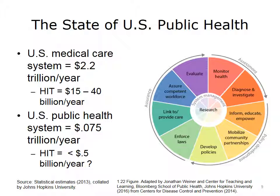The term population health is a controversial one for some public health professionals. Some in the public health community believe that the medical care system and insurance organizations have co-opted the term population health, where in fact public health departments and practitioners are the ones toiling in the field with limited resources, trying to serve the entire community — while medical and insurance providers with far more resources are only concerned with a subset of the community. As of 2012, the U.S. was spending approximately $2.2 trillion on direct services medical care, compared with about one-thirtieth of that amount for community-targeted public health services at local, state, and federal levels.